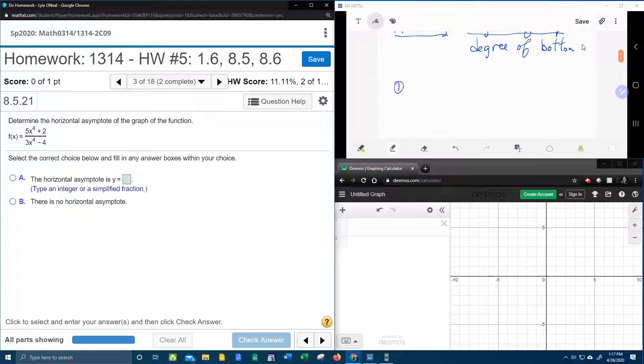if the degree of the top is less than the degree of the bottom, that means your horizontal asymptote is going to be y equal to zero. There's nothing to figure out. If the degree of the top is less than the degree of the bottom, it's just going to be y equal to zero. So that's your horizontal asymptote.